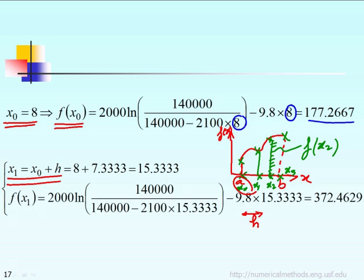One more example. x1 equals 15.3333. To calculate the function at x1, you simply go back to the complicated function. Whenever you see x, you replace it by 15.33. That's how you figure out f(x1) is equal to 372.4629.